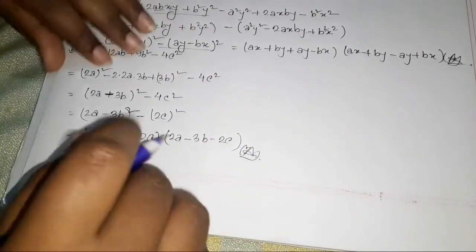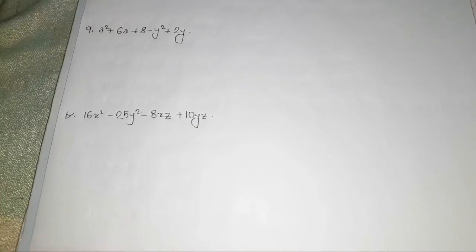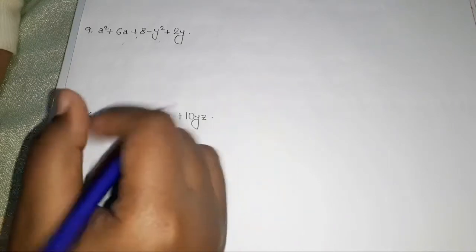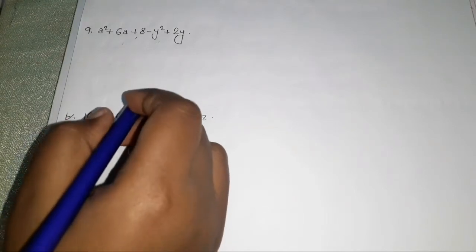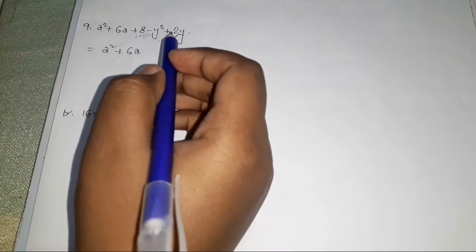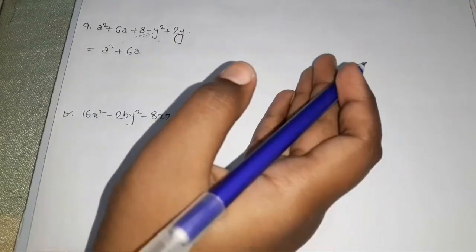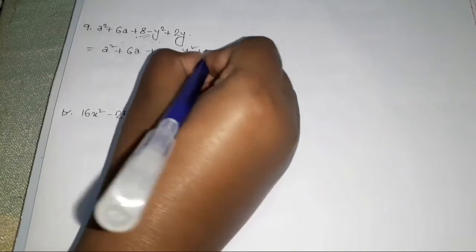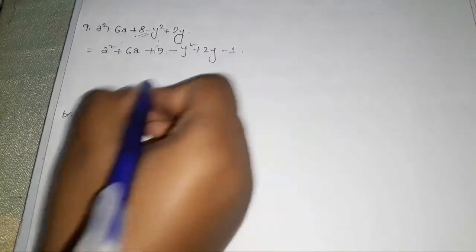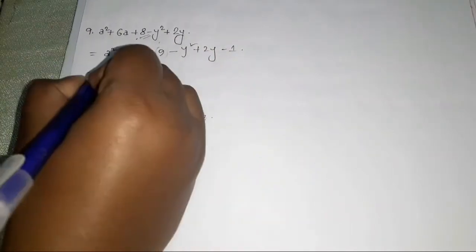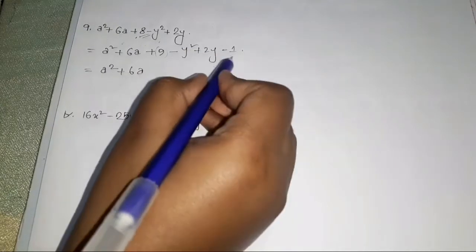Now problem 7: a² + 6a + 9 - y² + 2y - 1. Let's rearrange this. We see a² + 6a + 9, which means we can write this as (a + 3)².